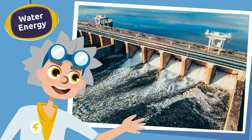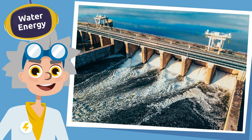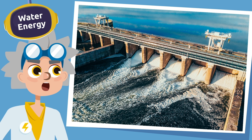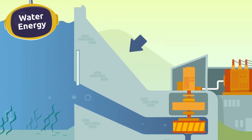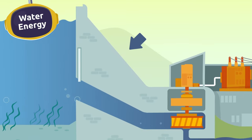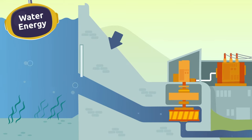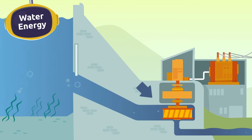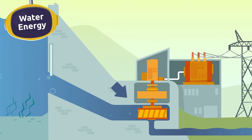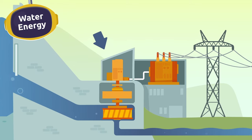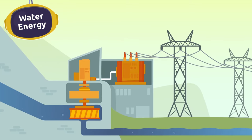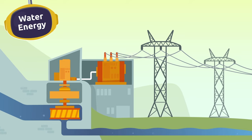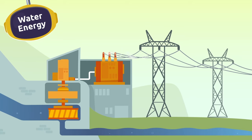We can also get energy from the force of water. Maybe you have seen a dam — it is a big wall built to collect large amounts of water. The water is pushed through pipes, which creates the pressure needed to turn the blades of the turbine, thus activating the generator and producing electricity. This type of energy is called hydroelectricity.